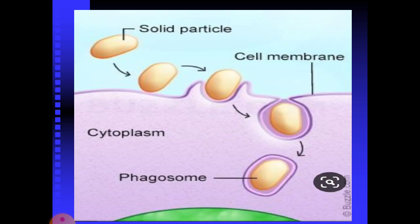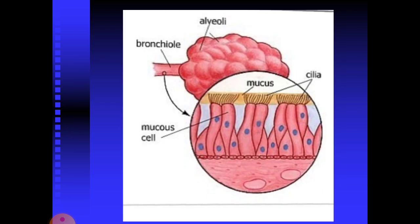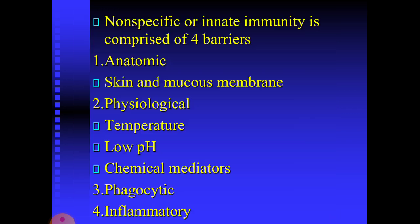Moving on to physiological barriers. The physiological barriers that contribute to innate immunity include temperature, pH, and various soluble factors. Many species are not susceptible to certain diseases simply because their normal body temperature inhibits the growth of pathogens. Chickens, for example, have innate immunity to anthrax because their high body temperature inhibits the growth of the bacteria. Gastric acid is an innate physiological barrier to infection because very few ingested microorganisms can survive the low pH of the stomach contents.